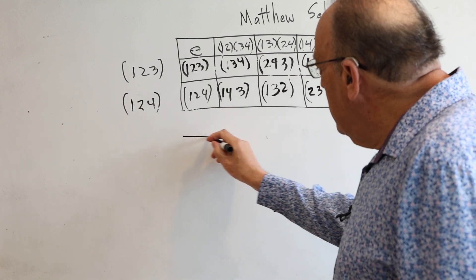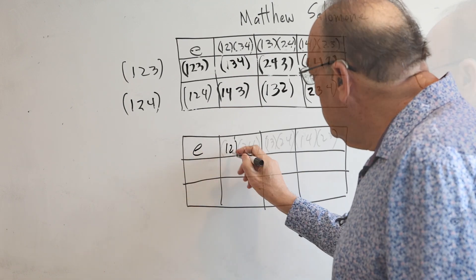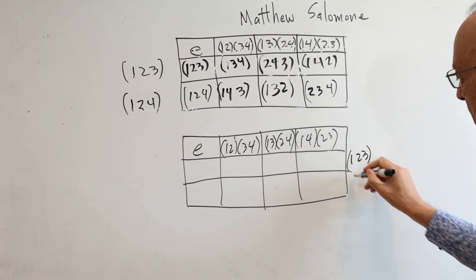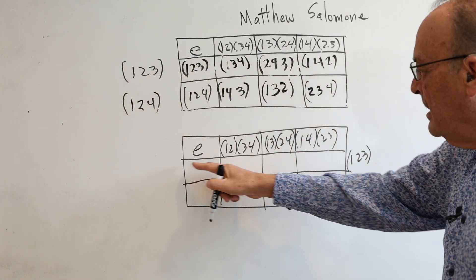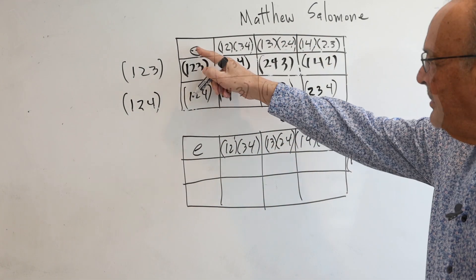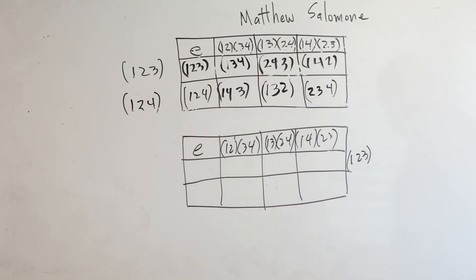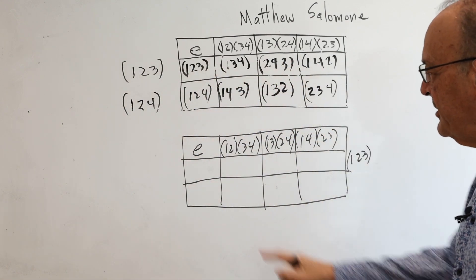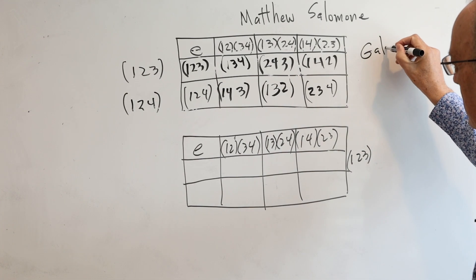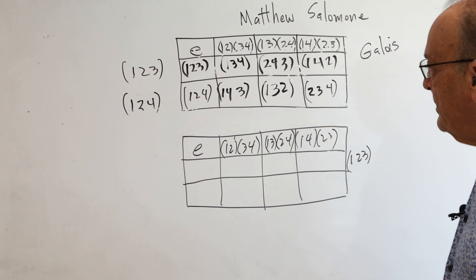Now let's do the same thing, but let's try working on the right. We'll go ahead and copy, and now we're going to multiply on the right. We want to see if this coset and this coset turn out to be the same coset. If it turns out that it is the same coset, we're going to end up with what's called a normal subgroup. A subgroup can be normal or not be normal. The mathematician Galois was the discoverer that normal subgroups had special importance in algebra.